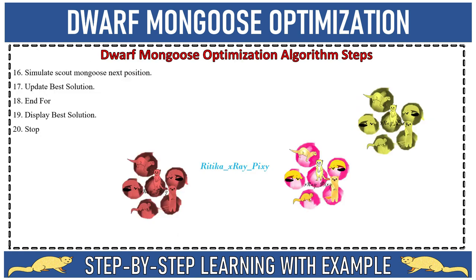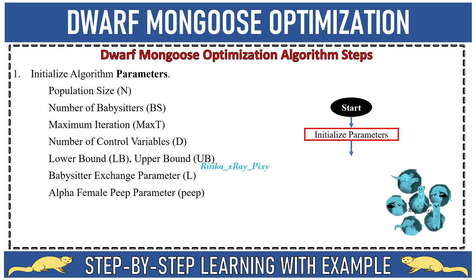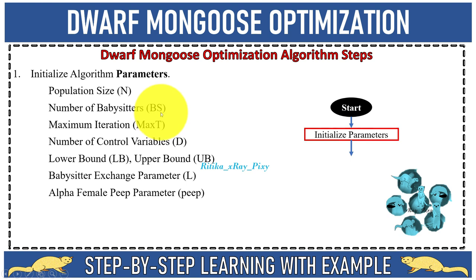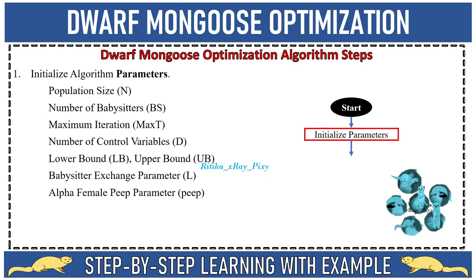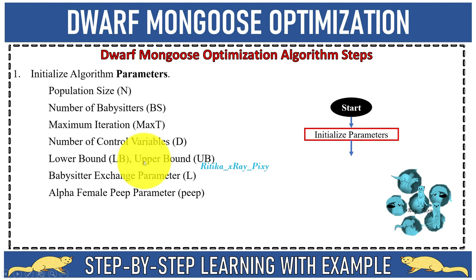Now step by step we will understand how this algorithm works. First we initialize the algorithm parameters: population size, which is the total number of search agents (mongoose); number of babysitters; maximum number of iterations, which determines how many times the loop will repeat; total number of design variables, or problem dimension; and lower and upper bounds, which define the search space boundary. We need the optimal solution within this boundary.